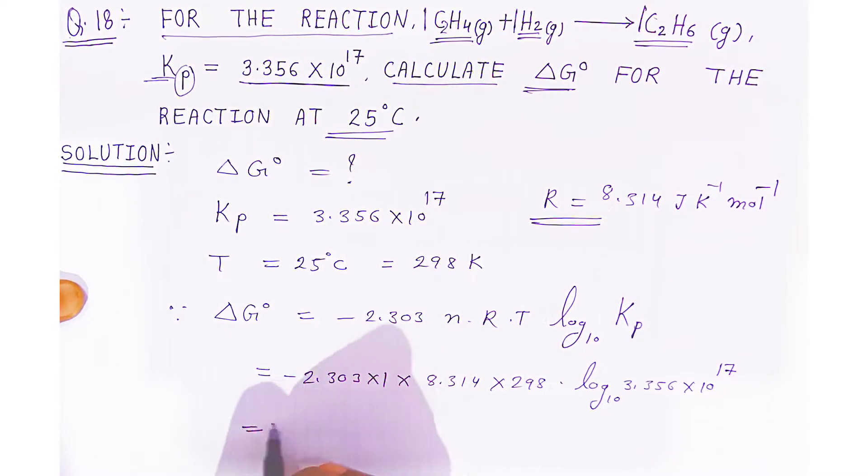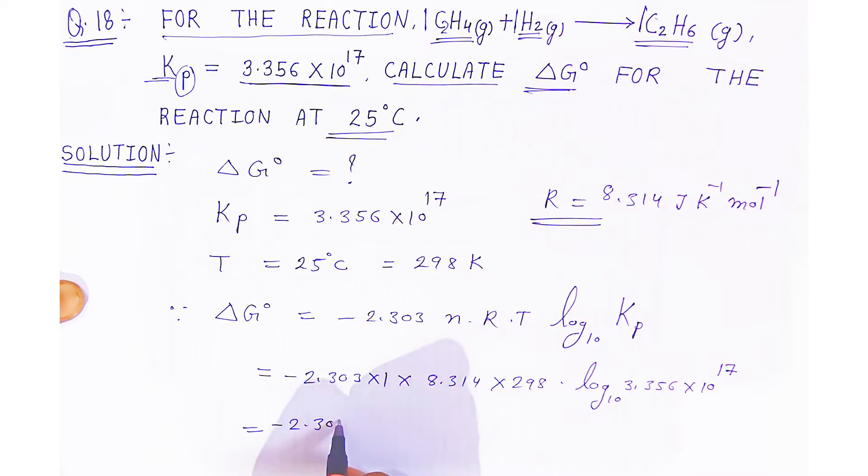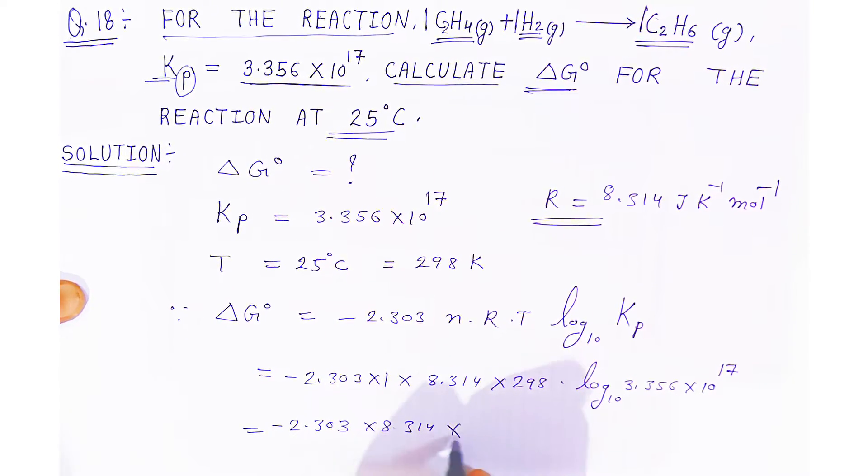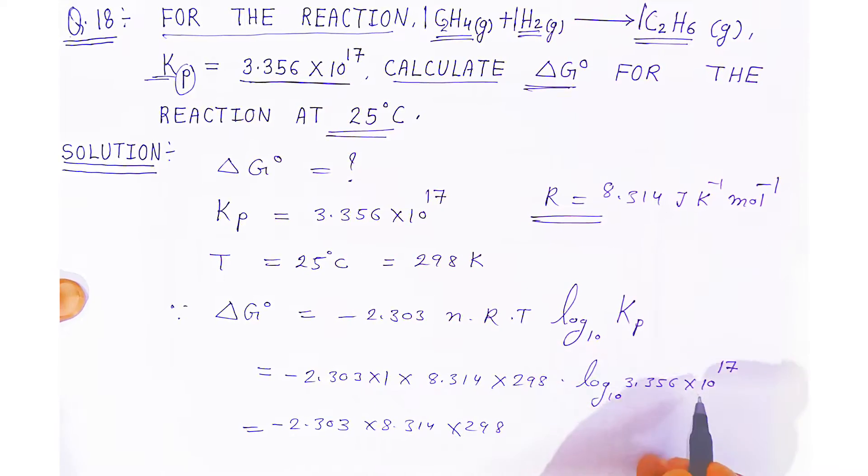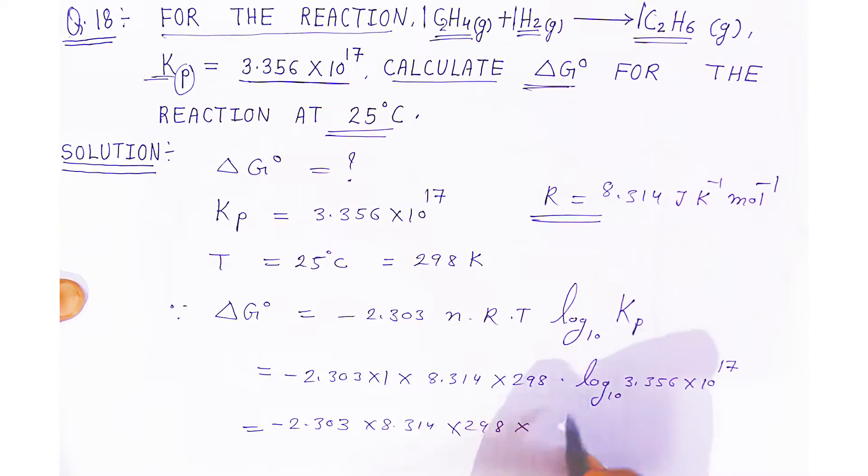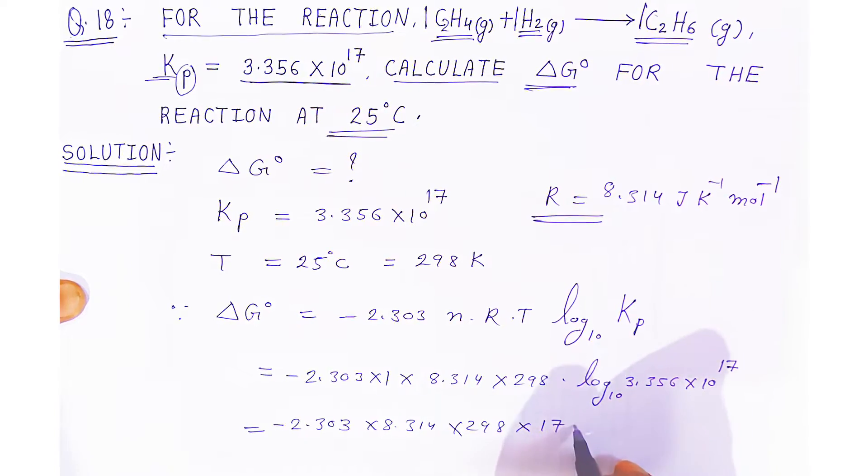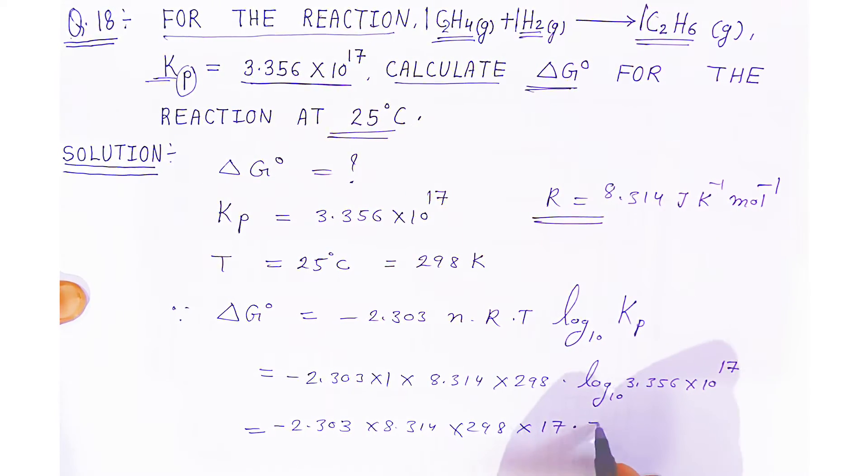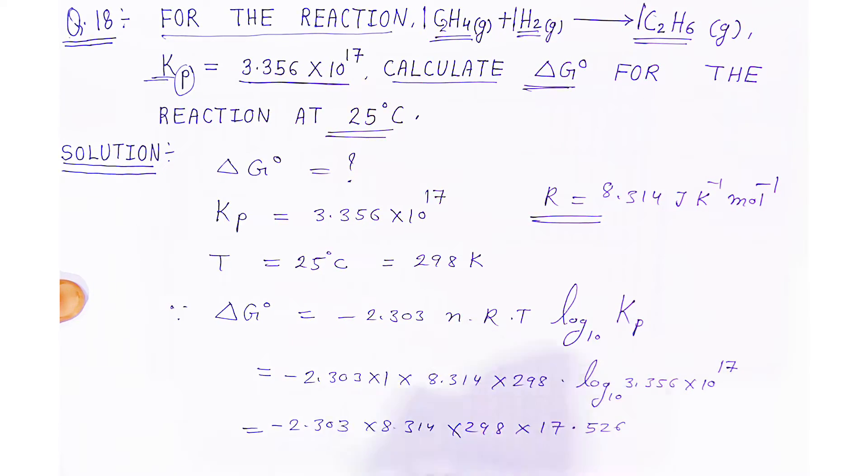You have to multiply with the help of the log table. If you multiply 8.314 by 298, the log of this will be approximately -16.5.